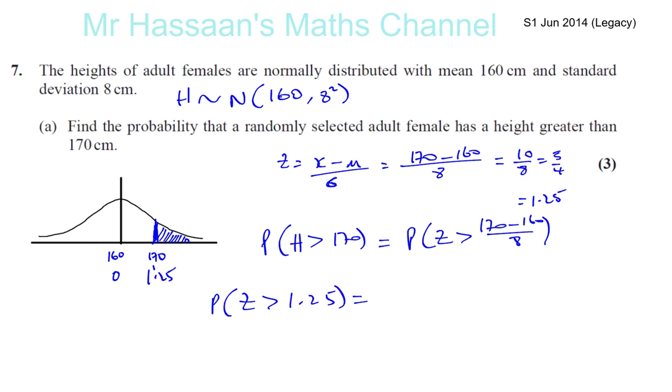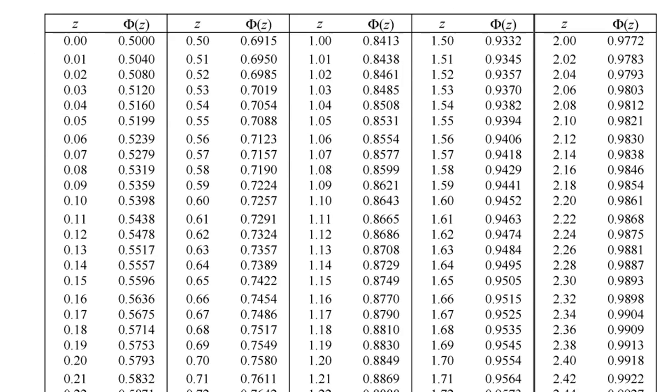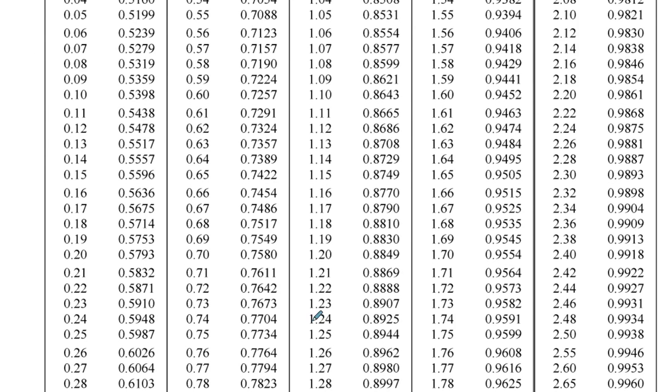Okay, 1.25, go down. Then this value here is not the area to the right of that value of Z, it's the area to the left of the value of Z.